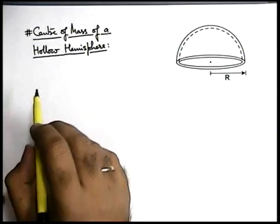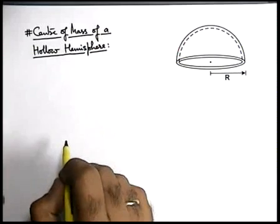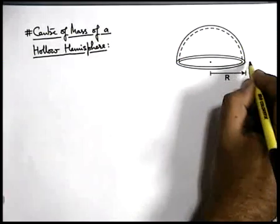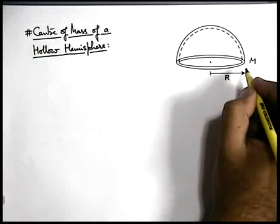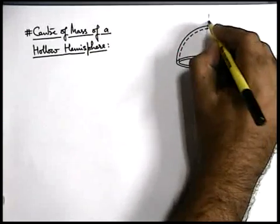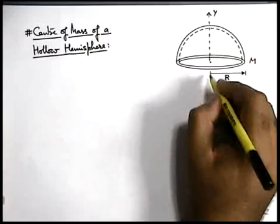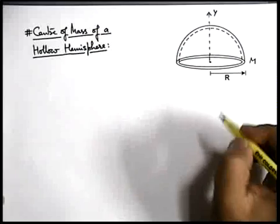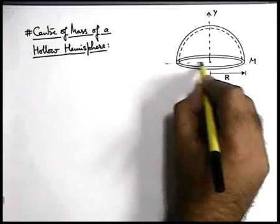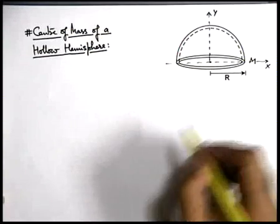Let's discuss how to find the centre of mass of a hollow hemisphere. Similar to the previous cases, if we have a hollow hemisphere of mass M and radius R, we can state that its centre of mass will be located somewhere on the y-axis, which is the vertical line passing through the centre of this hemisphere. We also consider its horizontal diameter as the x-axis for our calculation purpose.